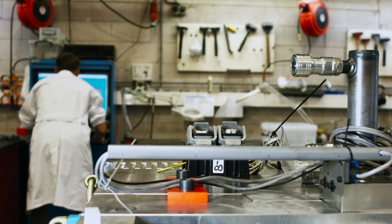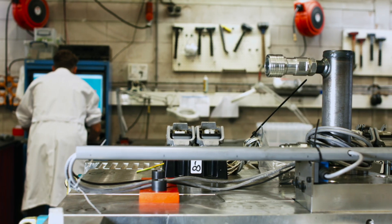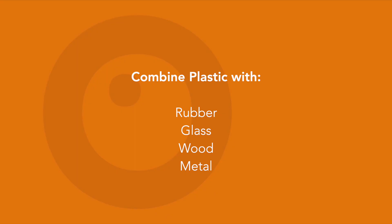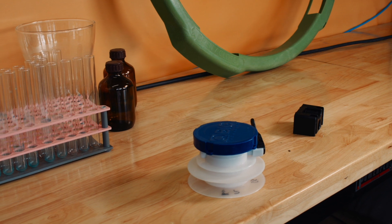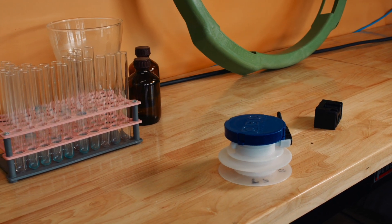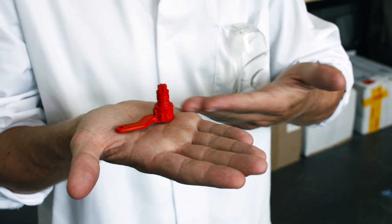Injection molding can be used to combine different materials into a single product, such as combining plastic with rubber, glass, wood, or metal. This makes injection molding the method of choice for many product ideas, even when it places extraordinary demands on function or aesthetics.